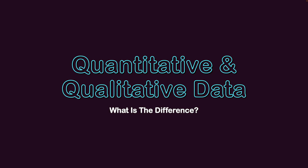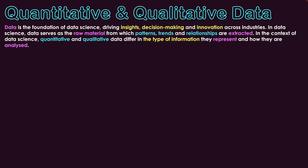Quantitative and qualitative data — what is the difference? Data is the foundation of data science, driving insights, decision making and innovation across industries. In data science, data serves as the raw material from which patterns, trends and relationships are extracted. Quantitative and qualitative data differ in the type of information they represent and how they are analysed, and that's what we're going to briefly introduce today.